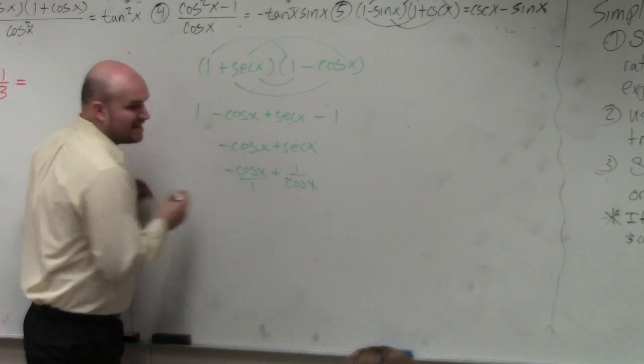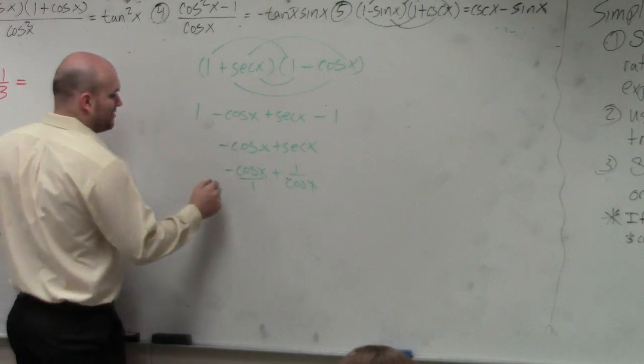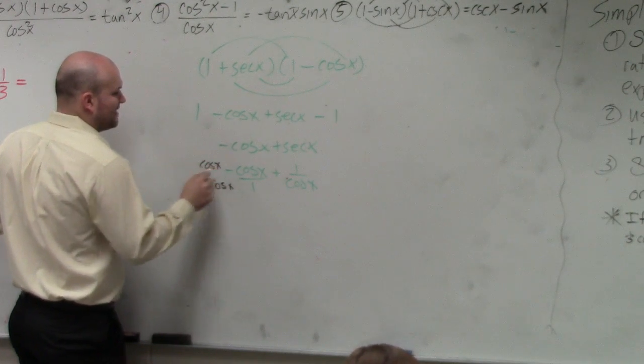Now, I can think of them as having the same common denominator to combine them. So I'd have to multiply by cosine of x over cosine of x.